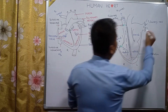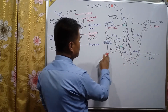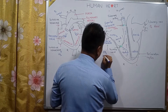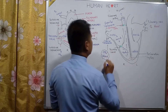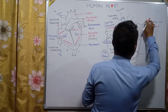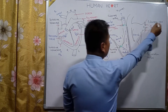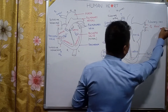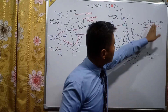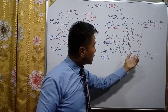The pulmonary veins carry oxygenated blood. The oxygenated blood enters through the pulmonary vein into the left auricle, and from the left auricle the blood is sucked down to the left ventricle.